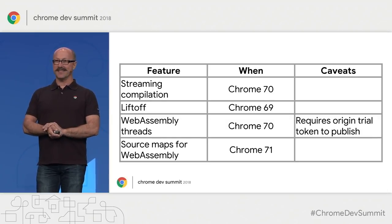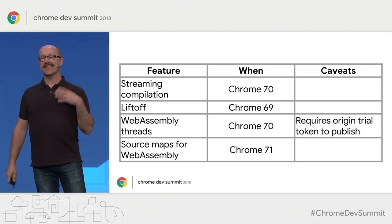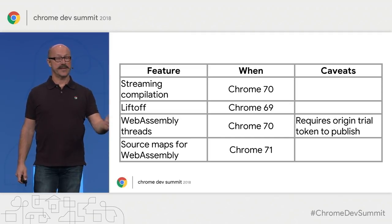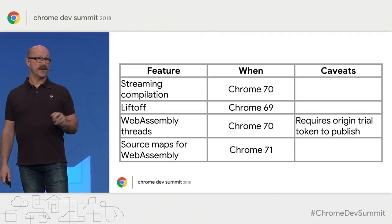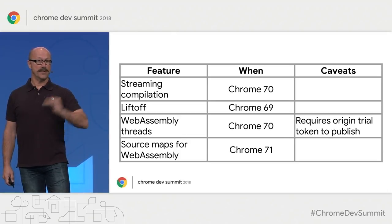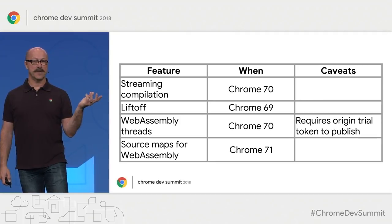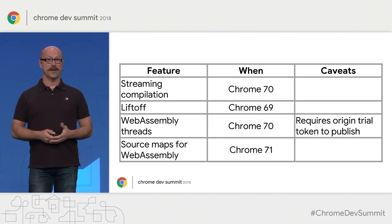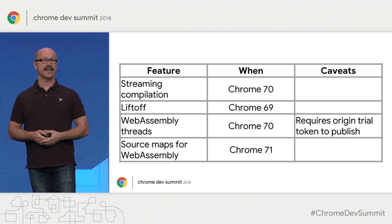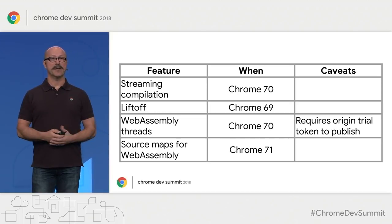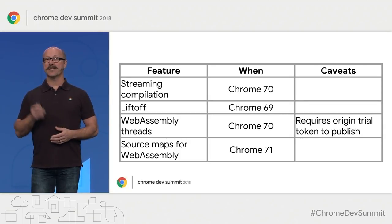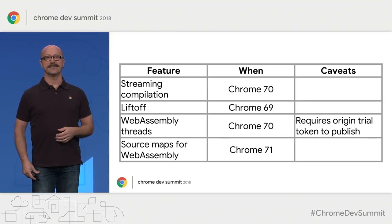To recap what we've talked about today: first, streaming compilation lets the browser compile the WebAssembly module as it comes over the wire — launched now in Chrome 70, which speeds things up. Second, Liftoff is the tiered compiler, so you get the first compile really fast so your app starts, and then hot-swaps in better optimized code a bit later. Then we have WebAssembly threads shipping now in Chrome 70, available via origin trial so you can ship it to your customers. And Chrome 71, coming out very soon, contains source maps, making it much easier to debug your code. I'd encourage all of you to start using WebAssembly threads, because it unlocks the power of the supercomputer that's sitting in your pocket right now. Thank you.